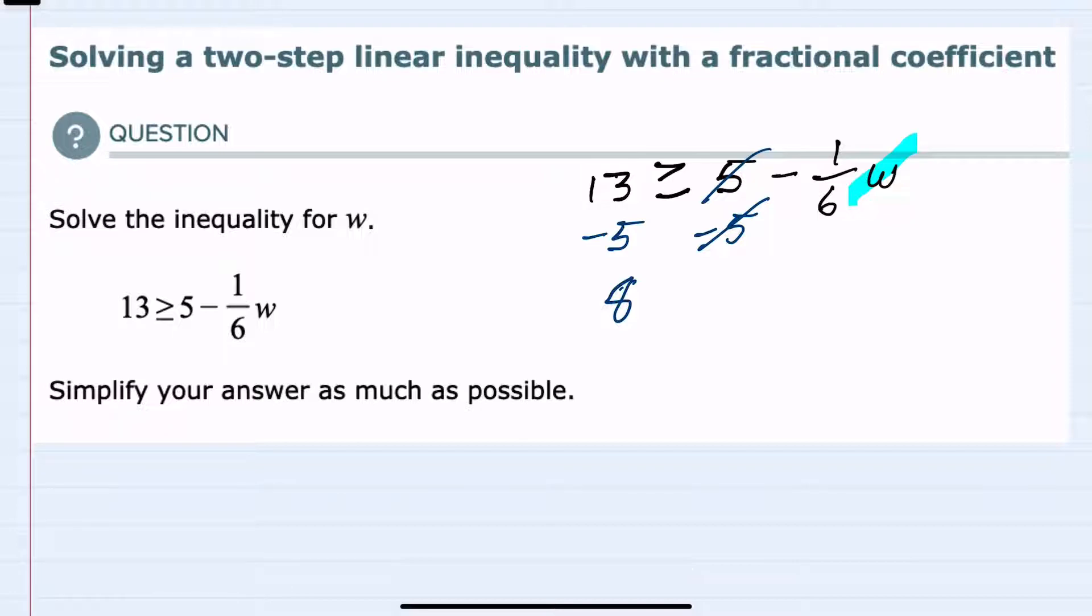Anytime I add or subtract to an inequality, the direction of that inequality does not change. On the right-hand side I now have negative one-sixth w, so I'm one step closer to isolating the w.